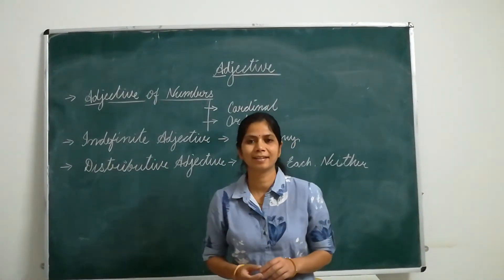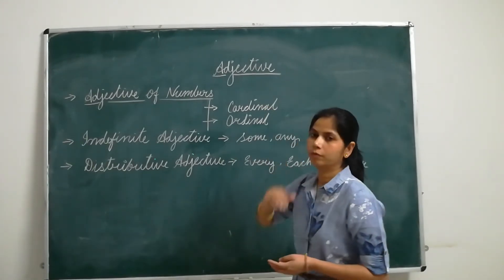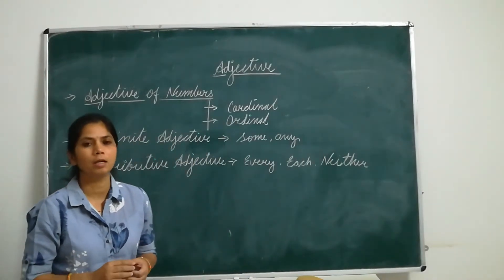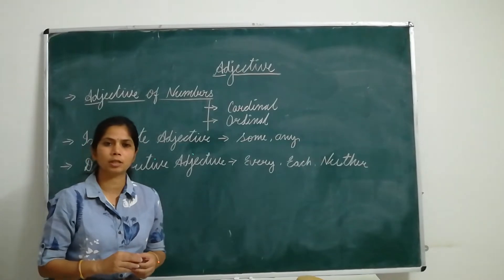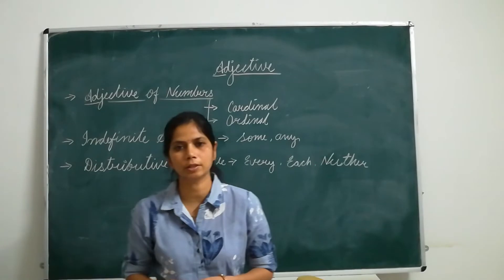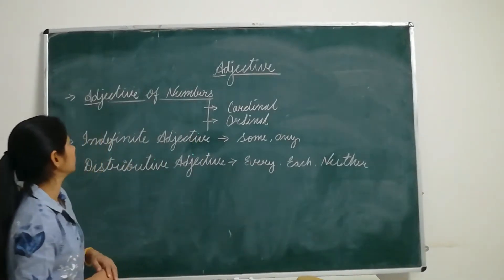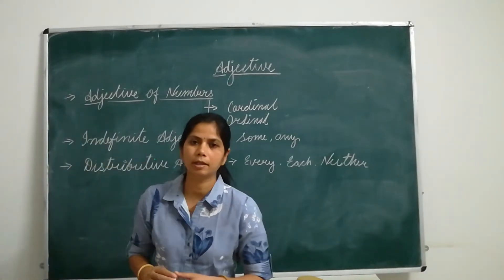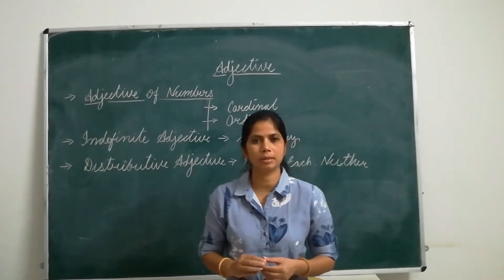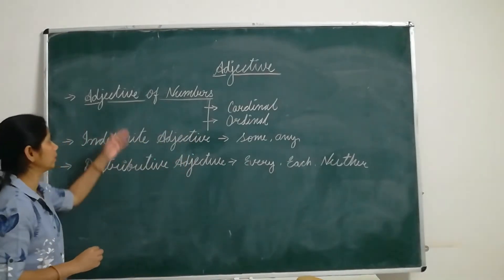Hello students, welcome back. In our previous class we were doing the topic of adjectives and we will continue that topic. We learned about what an adjective is, the positions of adjectives, and the different kinds of adjectives. Today we will study some more kinds of adjectives. In our previous class we studied about quality adjective, quantity adjective, number adjective, and possessive adjective.